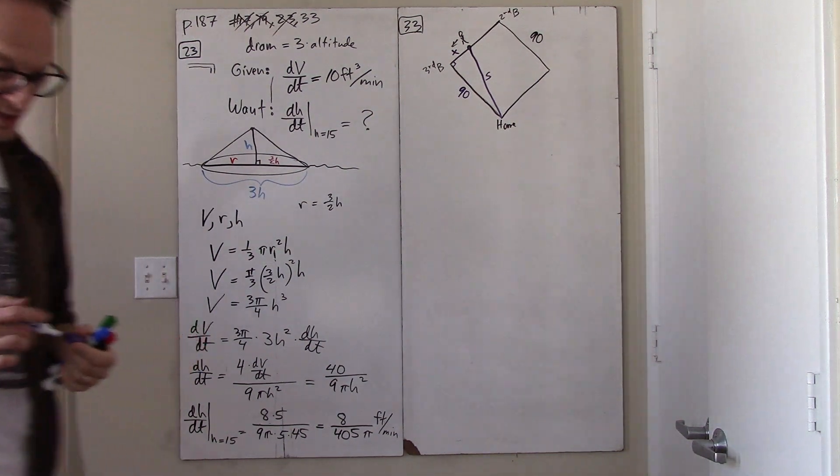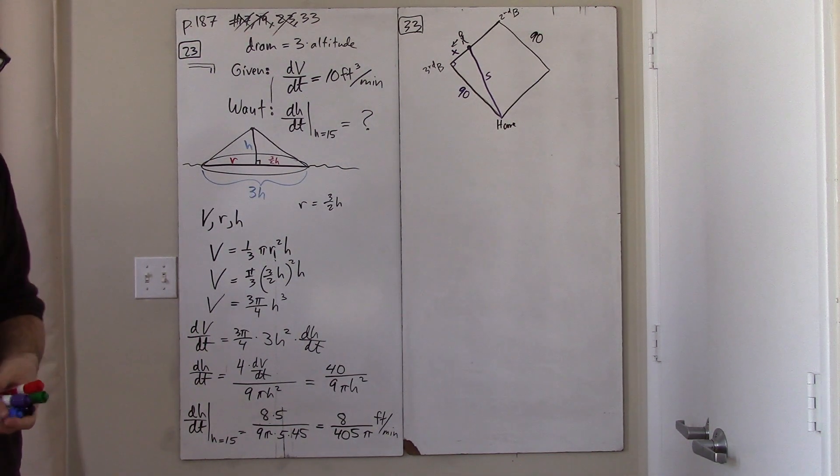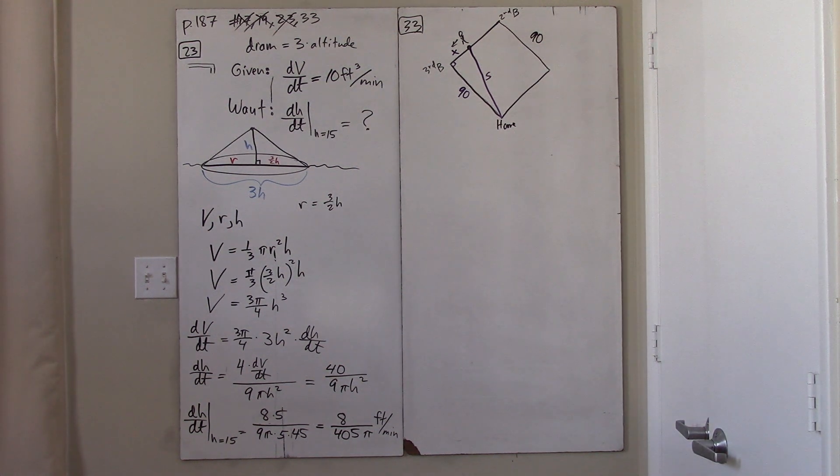Now, restate the information given in the problem in terms of those variables. The information given in the problem is that the player is running from second base to third base at a speed of 28 feet per second.